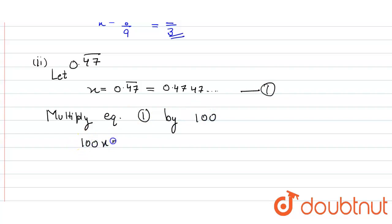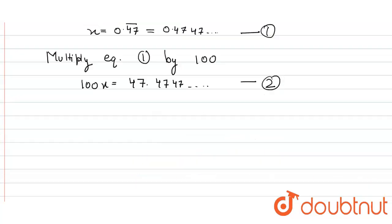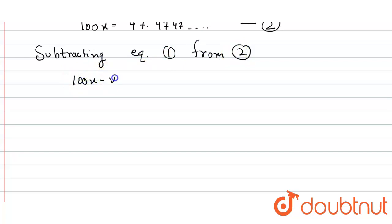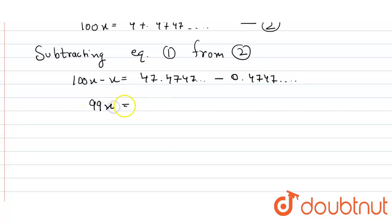So we get 100x is equal to 47.4747..., and we consider this to be equation number two. Now, subtracting equation one from equation two, on the left hand side we get 100x minus x equal to 47.4747... minus 0.4747..., giving us 99x equal to 47. So the value of x is equal to 47 upon 99, and that's our p by q form.